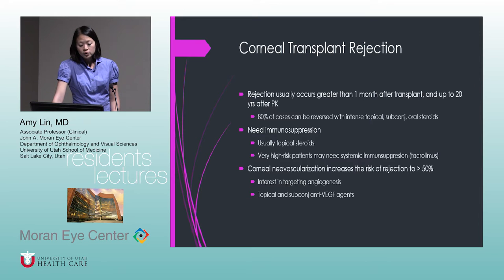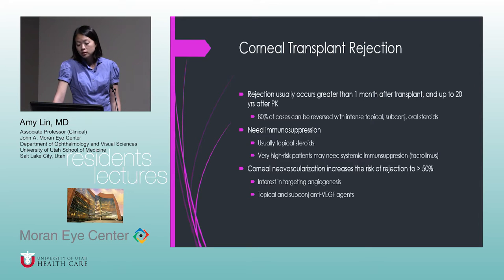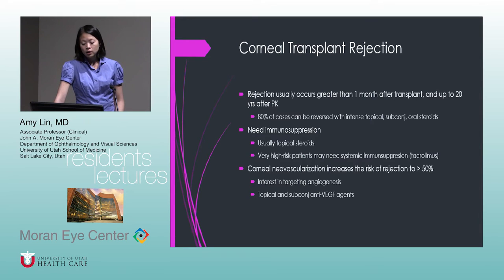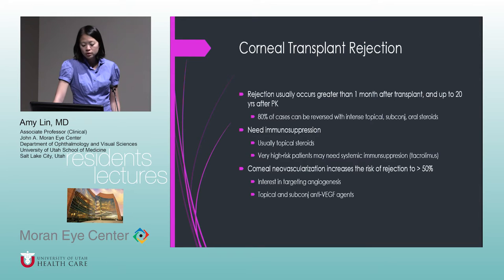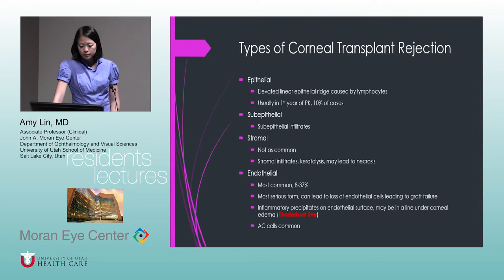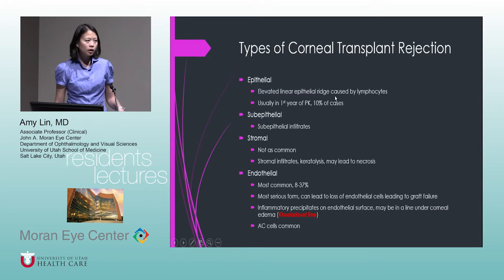Corneal transplant rejections can occur greater than one month after a transplant and up to 20 years later. Eighty percent of cases can be reversed with intense topical, subconjunctival, and/or oral steroids. Patients need some form of immunosuppression for their corneal transplant — usually topical steroids. For very high-risk patients prone to rejection, systemic immunosuppression may be needed. Corneal neovascularization increases the risk of rejection to greater than 50%.